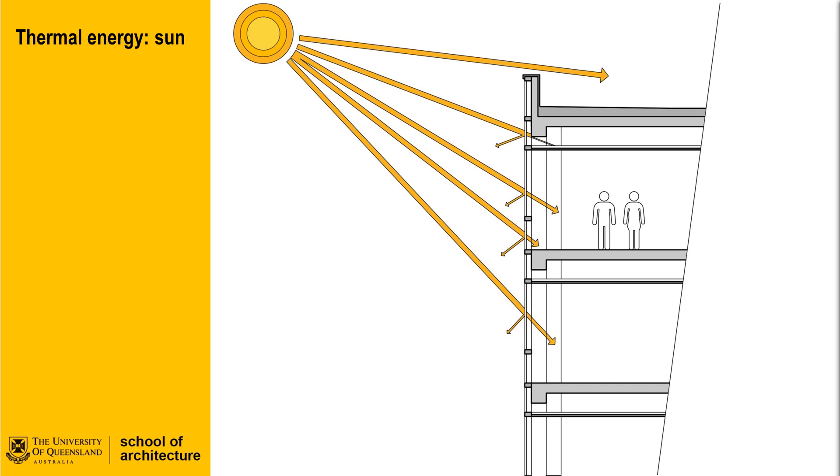Depending on the material, the facade can resist the ingress of thermal energy from the sun through the insulating properties of the material as well as other strategies such as reflectance. Not all sun is bad though, as in winter solar energy can be a major benefit to human comfort without the need for additional heating.